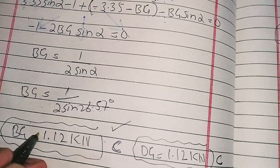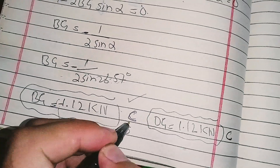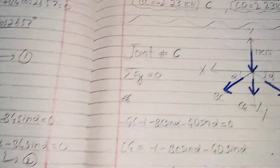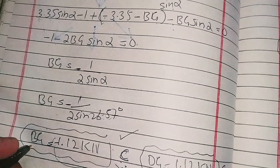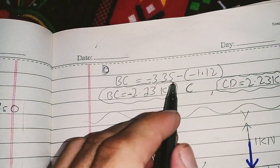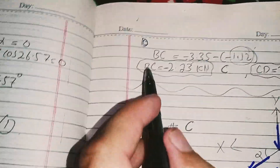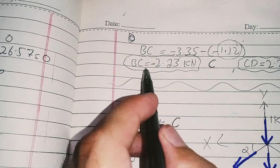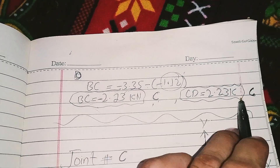Since BG is in compression, putting BG equal to negative 1.12 kN back into equation one: BC equals negative 3.35 minus (negative 1.12), which gives BC equal to negative 2.23 kN. The negative sign means my assumption was wrong, so BC is actually in compression. By symmetry, CD is also equal to 2.23 kN in compression.